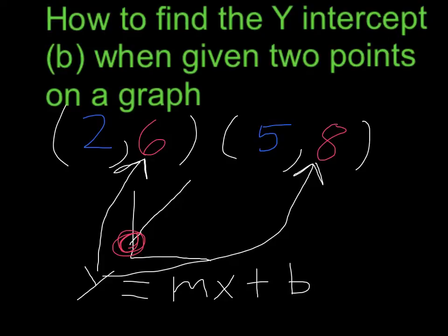m is the slope of the graph. I'll explain that later. x is the x points on the graph, the first points, and b is the y-intercept.